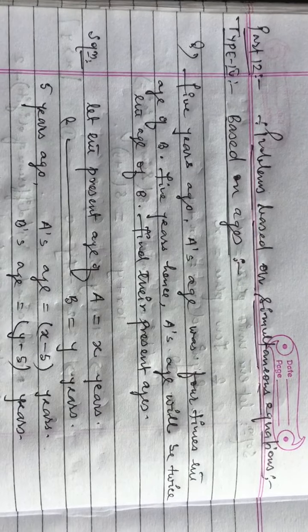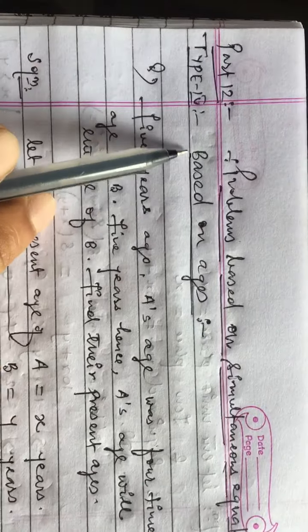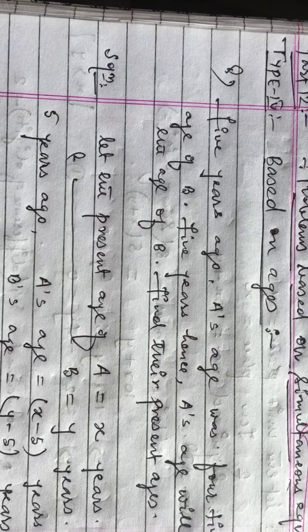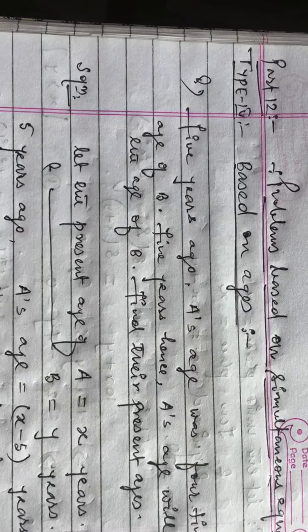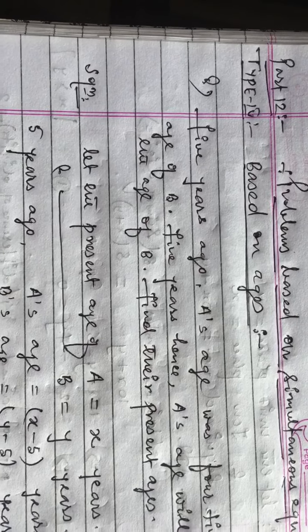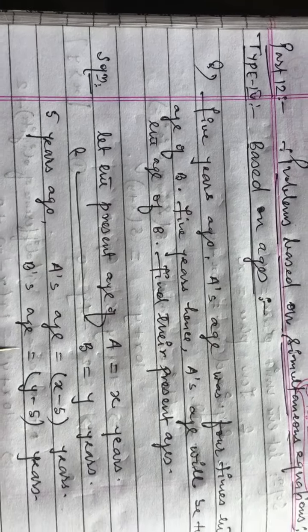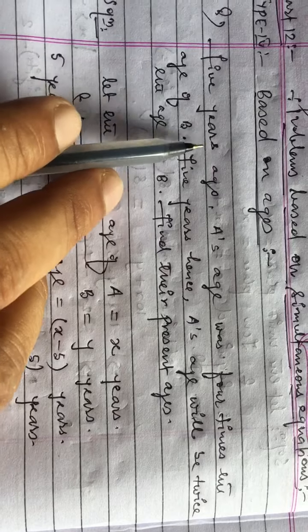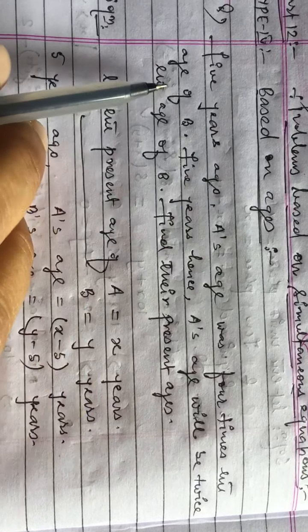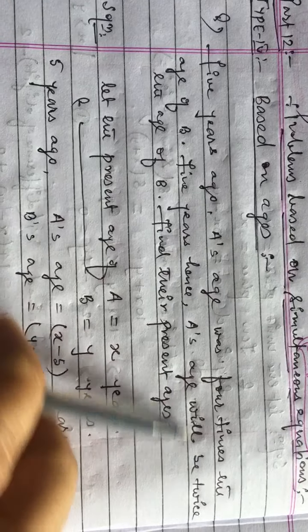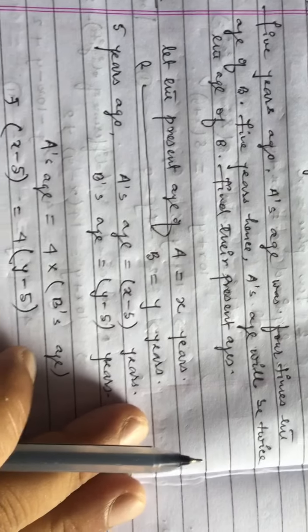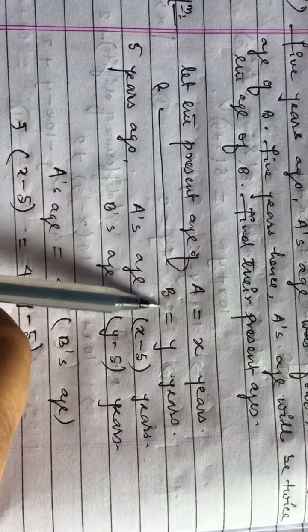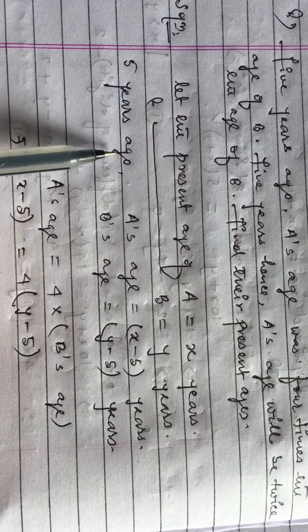Today I will explain problems based on age relation — Type 4, based on age relation. Whenever you are solving age relation questions, you always suppose their present age. Whatever the question is, don't worry — we will suppose their present age. Problem: Five years ago, A's age was four times the age of B. Five years hence, A's age will be twice the age of B. Find their present ages. Let the present age of A be x years and the present age of B be y years.